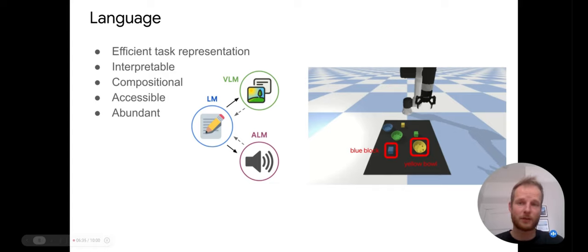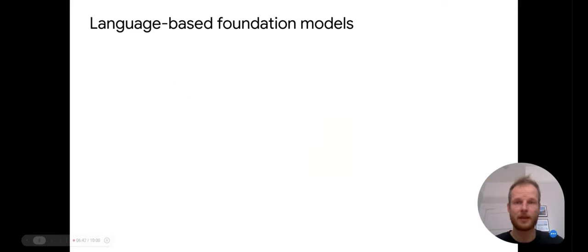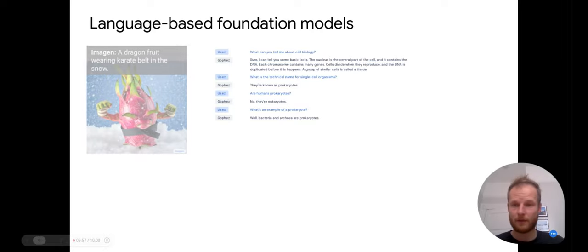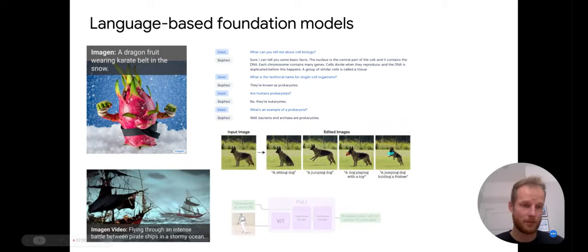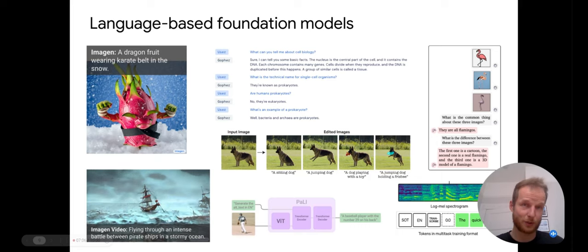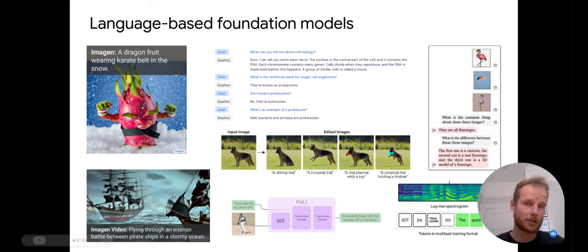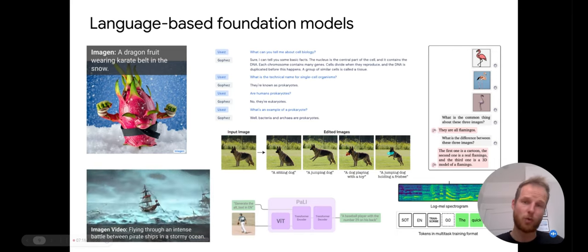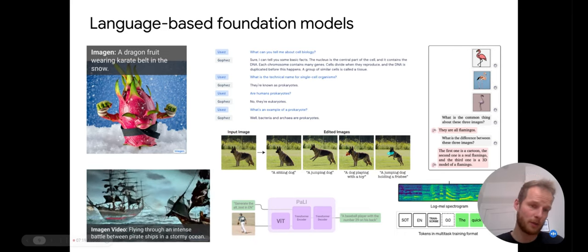We're also seeing this in other fields that start to put language at the center of their developments. Here are a few examples of language-based foundation models where a large language model is at the center and the modality of interest is attached to it — for instance image generation from natural language descriptions, the same with video generation, image editing, visual question answering, speech recognition, and so on. By putting language at the center, it can lead to quite substantial development across all those subfields of AI.